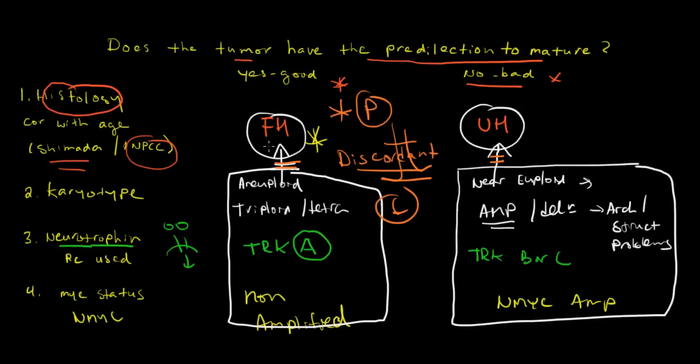But by and large, the favorable histology tumors tend to be quite aneuploid. They use TrkA as their neurotrophin receptor and N-MYC is non-amplified. Whereas if N-MYC is amplified, and if you actually look at it, what we said, that these were tumors that were near euploid but had structural abnormalities. And in fact, one of the most common structural abnormalities is exactly this, the N-MYC amplification. So we see it all goes together.